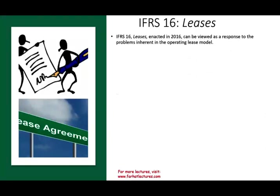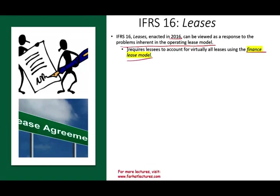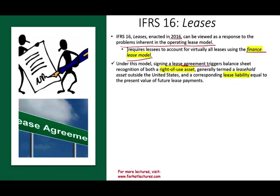That's no longer the case. IFRS 16 was enacted in 2016 in response to the problems inherent in the operating lease model. IFRS 16 now requires all leases to be accounted for under the finance lease model — it doesn't matter how you structure the agreement. When you sign a lease, it triggers balance-sheet recognition of both the right-of-use asset and the corresponding lease liability.